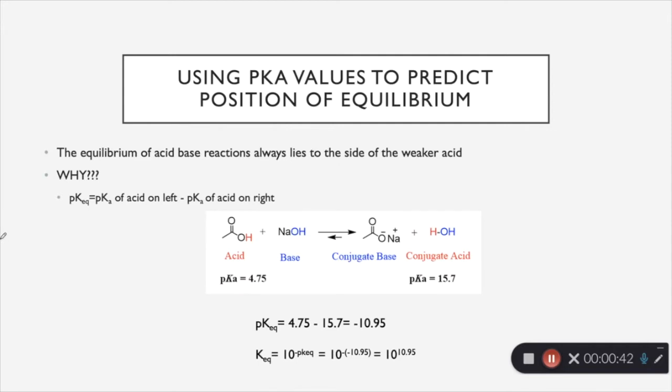But this gives you a little insight as to why the equilibrium always lies to the side of the weaker acid. So this is really just to give you a better foundation. The first equation we're going to look at says that the pKEQ equals the pKa of the acid on the left minus the pKa of the acid on the right.